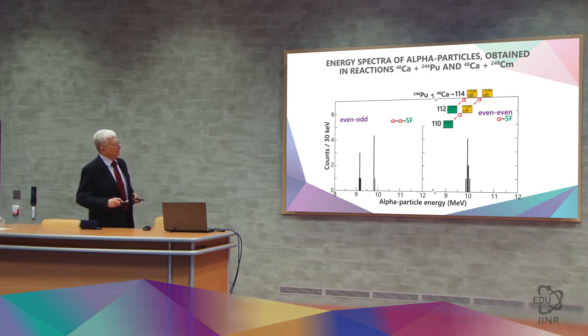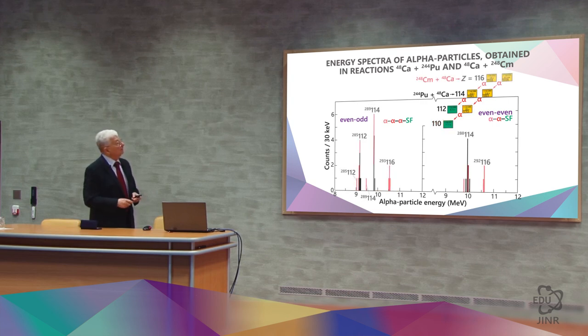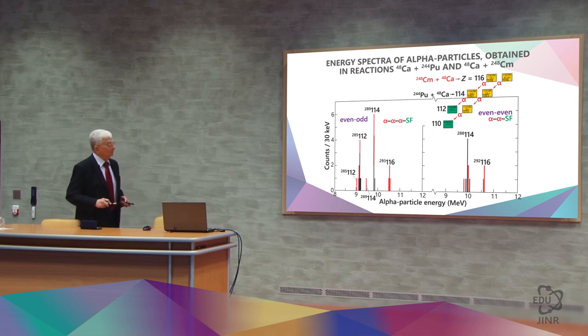For example, in an even-numbered nucleus, such as element 114, one alpha decay is followed by spontaneous fission. When the nucleus has an odd number, we have one decay plus a second decay, and only then will there be spontaneous fission. As soon as we go up a step, we can see what happens.